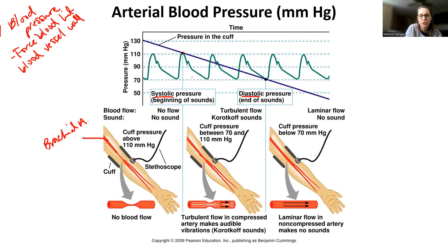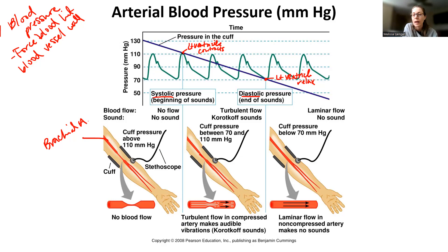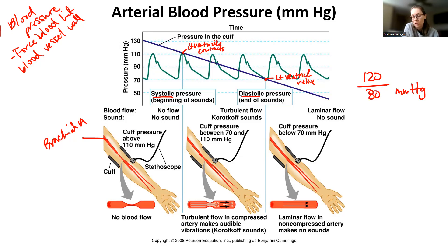Systolic pressure measures the contraction of the left ventricle. As you release pressure in the cuff, eventually blood flows continuously through the brachial artery and the Korotkoff sounds go away — that's your diastolic pressure, which tells us left ventricle relaxation. A normal blood pressure reading is 120 over 80 millimeters of mercury: 120 is systolic, 80 is diastolic.